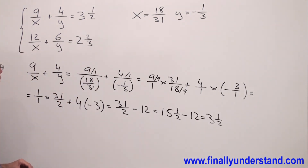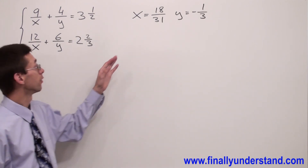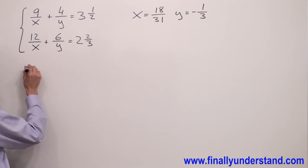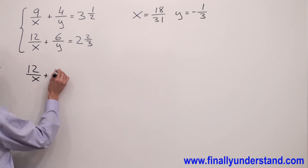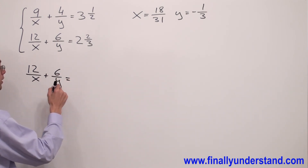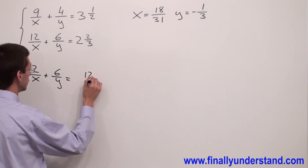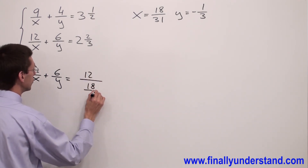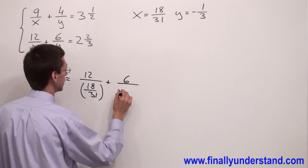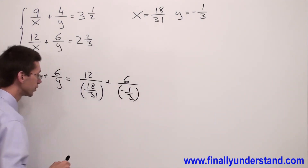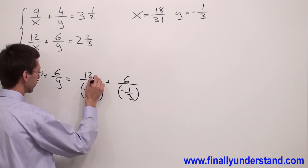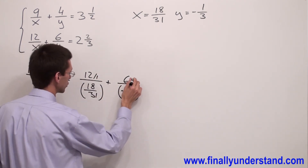Next, we check the second equation. Copying down the left side: 12 over x plus 6 over y. Substituting x equals 18 over 31 and y equals negative 1 third, we get 12 over (18 over 31) plus 6 over (negative 1 third). Since we have fractions in the denominators, I write 12 over 1 and 6 over 1.